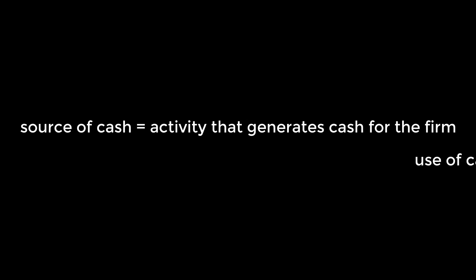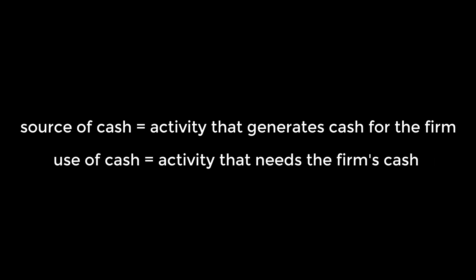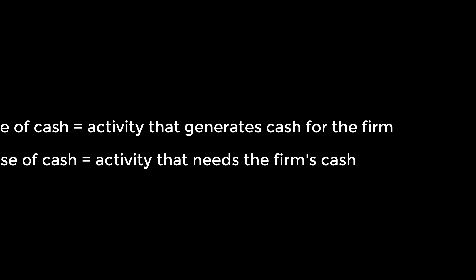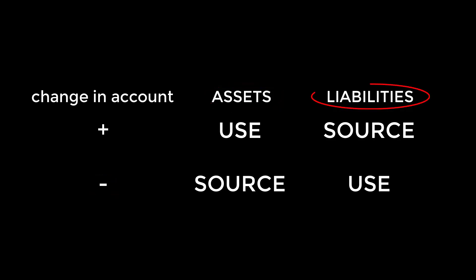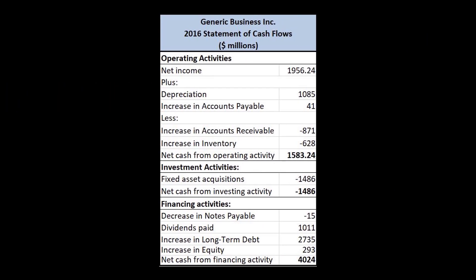A source of cash is an activity that generates cash, and a use of cash is an activity that uses the firm's cash. It's fairly easy to categorize whether something is a source or use of cash by referring to a visual chart. For example, buying new machines increases fixed assets and uses cash. Customers paying down accounts receivable reduces an asset account but is a source of cash. Taking a loan increases notes payable and brings cash in — a source. Paying down that loan uses cash. On the statement of cash flows, we can further divide sources and uses of cash into operating, investing, or financing activities.